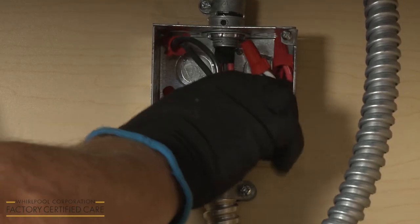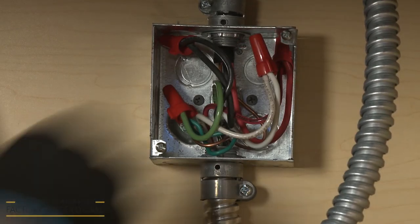With all of the wires positioned inside the junction box, replace and secure the cover.